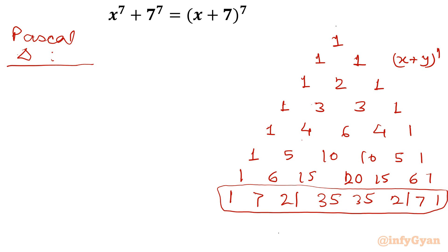Now I will expand this using Pascal's triangle method — we can use the binomial expansion also, but I am using Pascal's triangle. Coefficients are ready. We need to consider two things: the first variable's power will be in descending order, and the second power will be in ascending order. Let us write the equation.